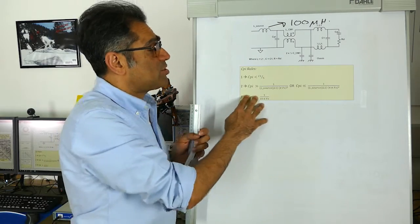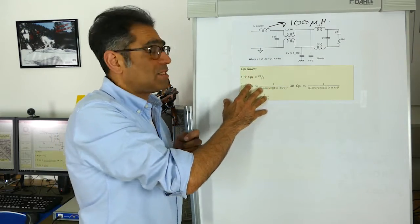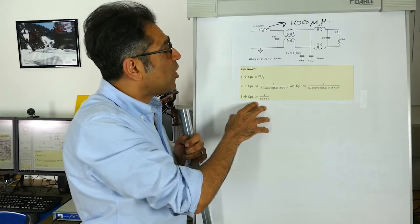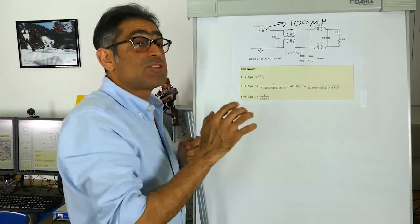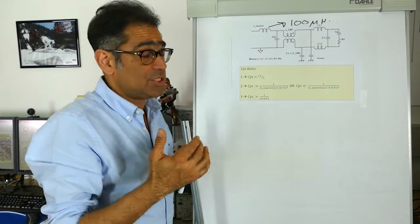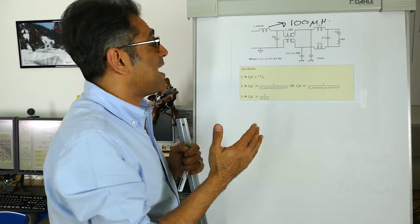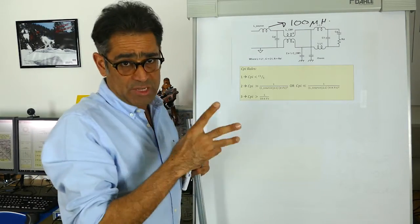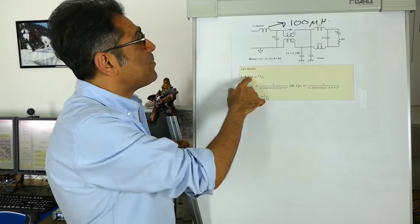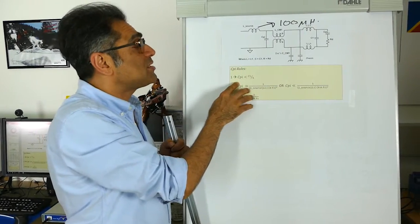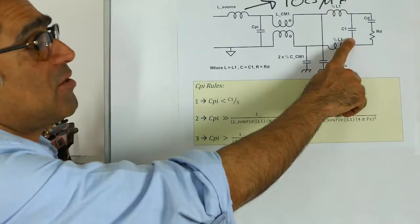Derivation of these equations are actually quite complex and we go through these in our workshops, but for now, in order to size it appropriately so that it does not cause oscillations or does not behave badly, you need to follow three rules. First of all, Cpi, the size of this, has to be smaller than one-fifth of C1.